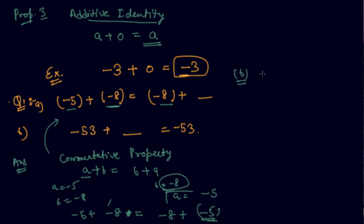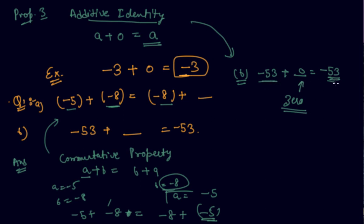Part b asks: what should we add to minus 53 to get the answer as minus 53? This is the additive identity property, which we discussed. The answer is 0 — we should always add 0 to get the number to remain the same. I hope you are clear about all three properties discussed in this lecture. If you have any doubt, please comment below, and download the Scholars Learning app from the Play Store or App Store. Please share it with your friends. Thank you students.